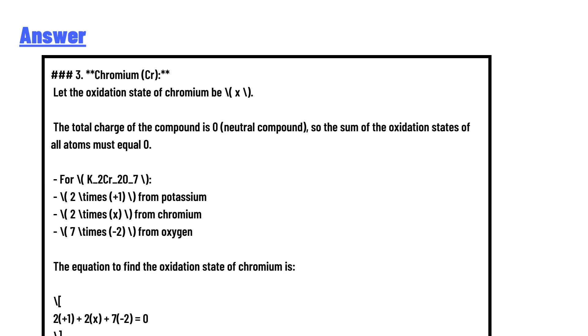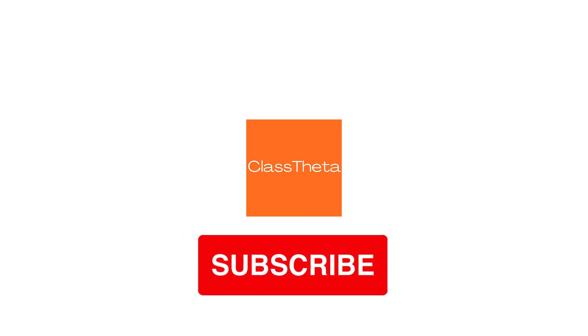Oxidation states: Potassium (K) = +1, Chromium (Cr) = +6, Oxygen (O) = -2. Thus, the oxidation state of chromium in K2Cr2O7 is +6. This is the correct answer to the question.